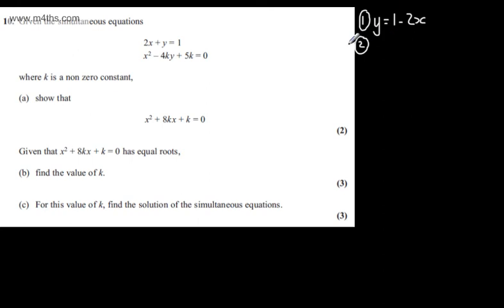If I do that, I can eliminate y from the second equation. x squared minus 4k multiplied by y, y is now 1 minus 2x, I have plus the 5k and we're going to set that equal to 0.